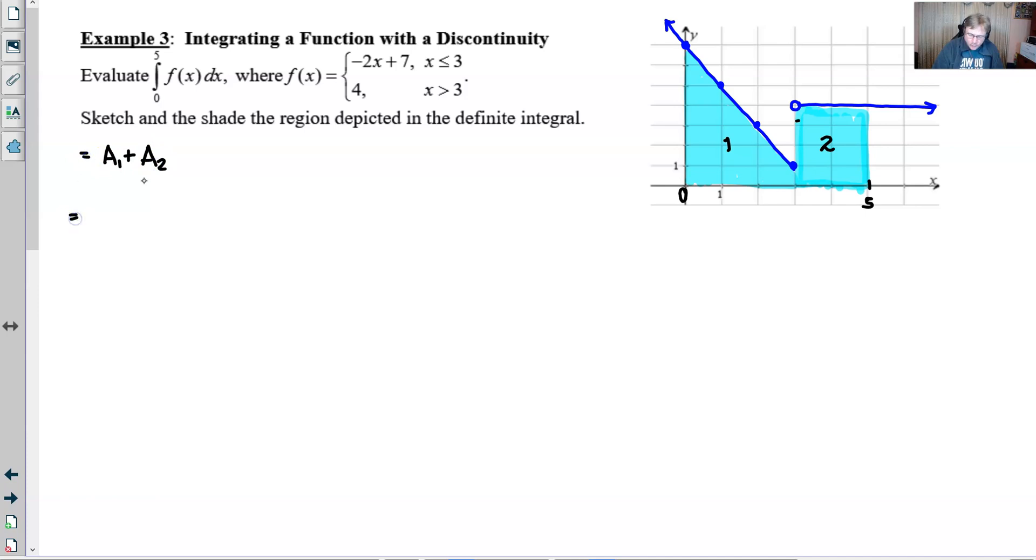And now region one is a trapezoid. So the formula would be one half times the sum of the bases, which are seven and one. Your seven would be on the left side, the one would be on the right side. And then the height would be three there along the bottom. And the area of region two, it looks like you've got a four by two rectangle there that you'll just manipulate.